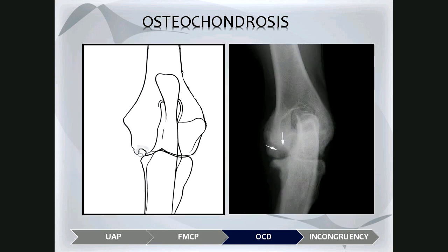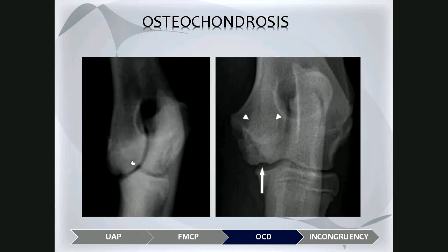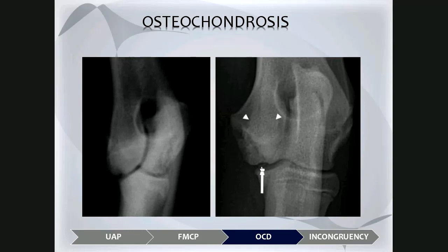The schematic image demonstrates where to expect the subchondral defect with a halo of sclerosis around it. On the actual radiograph, arrows depict a large radiolucent subchondral bone defect. This patient also has irregular new bone on the medial epicondyle, the region of the medial coronoid process, and the humeral articular margin, indicating arthrosis. On another example using the oblique view, one can nicely see the defect in the medial condyle, and sometimes a small mineralized fragment is visible — a piece of thickened cartilage that has fissured off and mineralized.